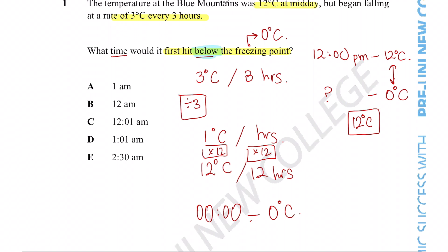12 am is when the temperature hits exactly freezing point. So the minute afterwards would be when the temperature falls below the freezing point. The correct answer option is not option B, but rather option C.